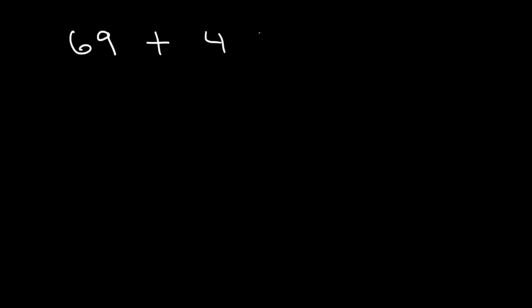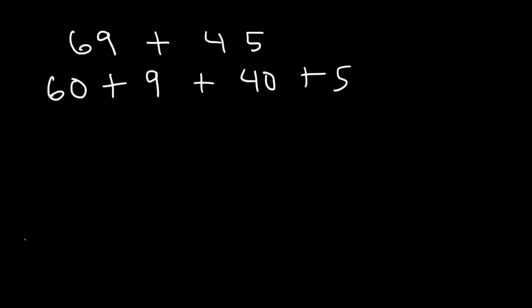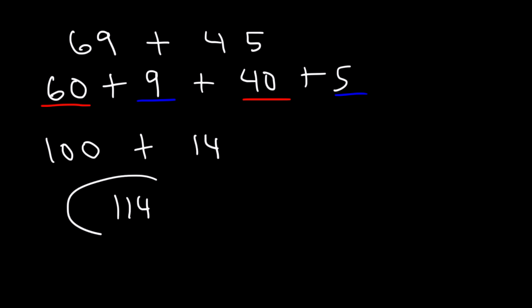Let's try another example. Go ahead and add 69 and 45. So 69 we can write as 60 plus 9, and 45 is 40 plus 5. If we add 60 and 40 that's 100. 9 plus 5 is 14. 100 plus 14 is 114.